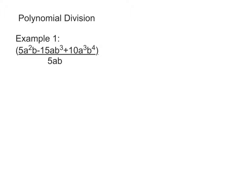A simple example of that would be 2X plus 4 over 2. When I'm simplifying 2X plus 4 over 2, I can divide 2X by 2 to get X, and 4 divided by 2 to get 2. So I can do the same thing with this next example.